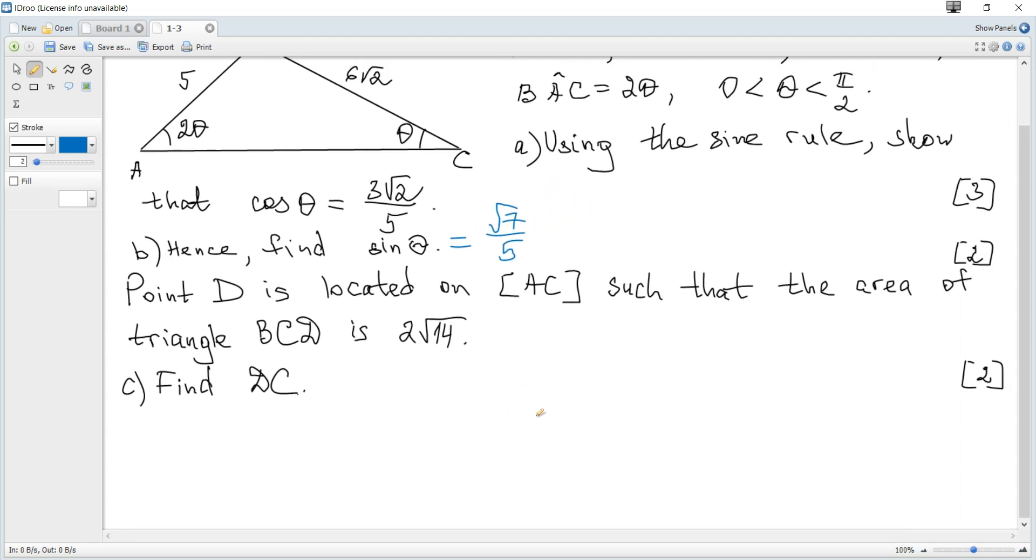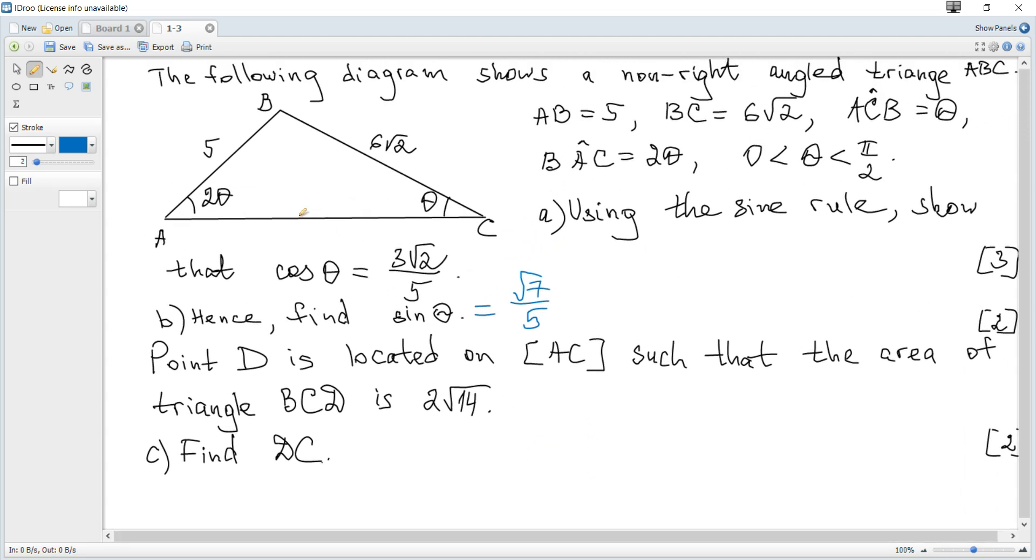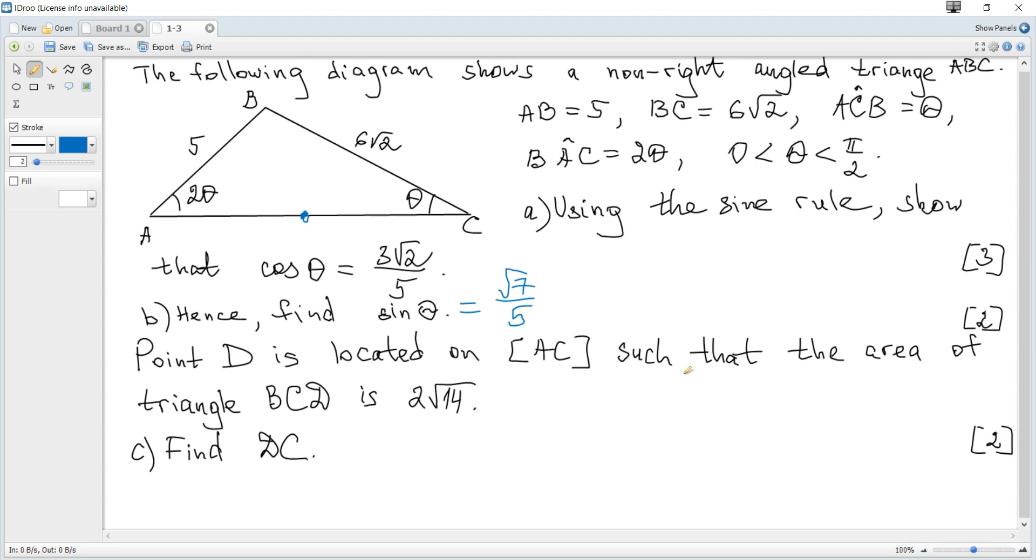Next, point D is located on AC such that the area of triangle BCD is 2 times root 14. Find DC.